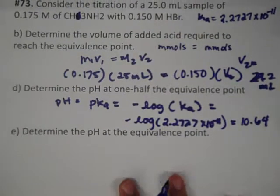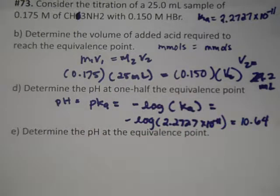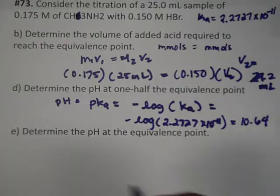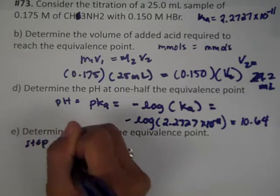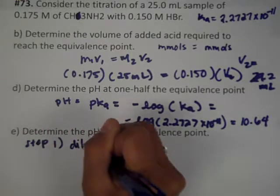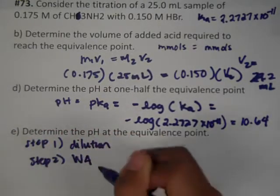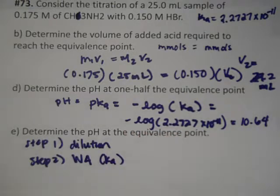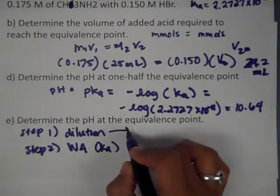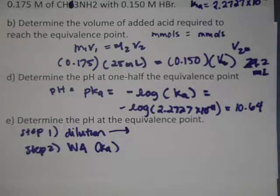At half the equivalence point, pH = pKa. But at the equivalence point, since this is a weak base–strong acid problem, we're going to find pH using a weak acid Ka problem like we did in the last chapter. Step 1 is a dilution, and step 2 is the weak acid Ka shortcut method to find pH.